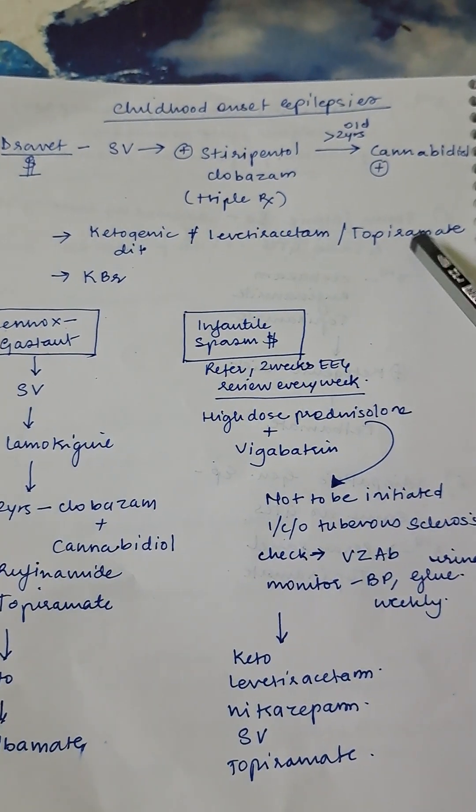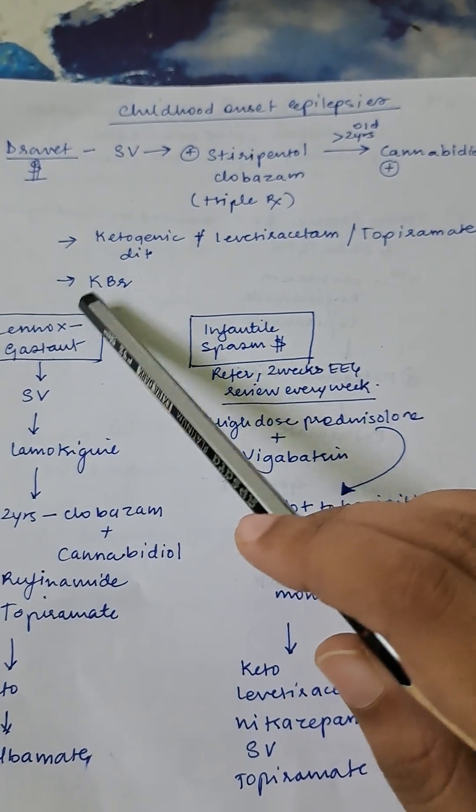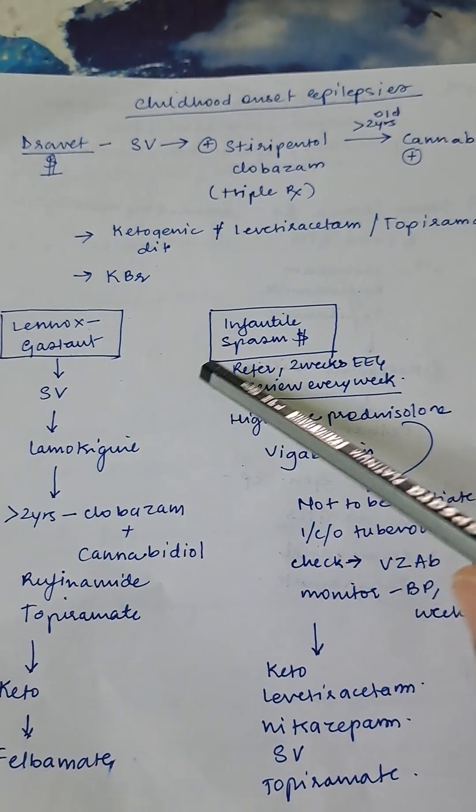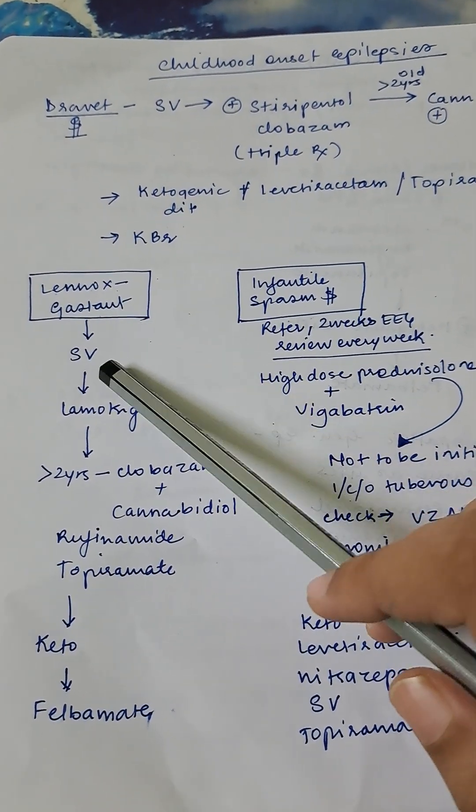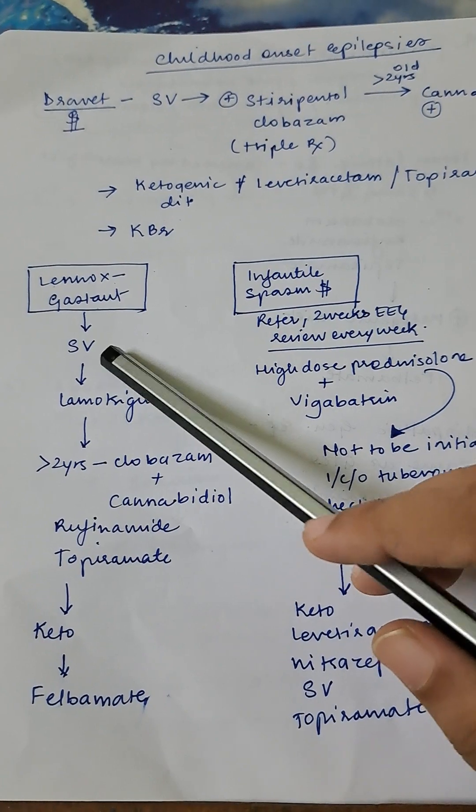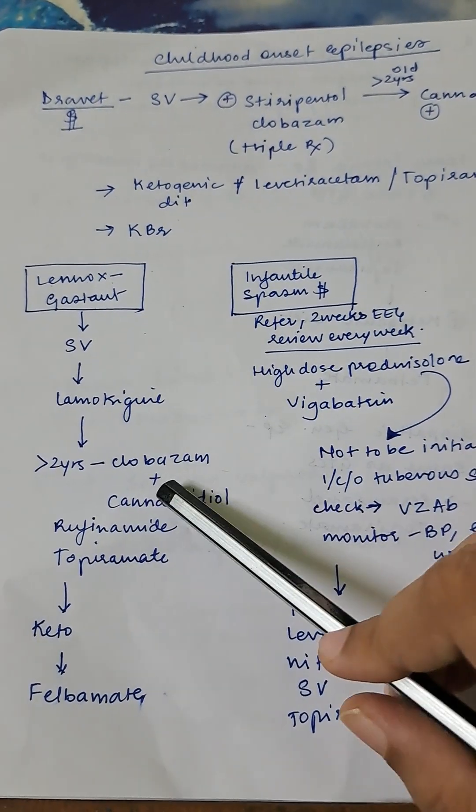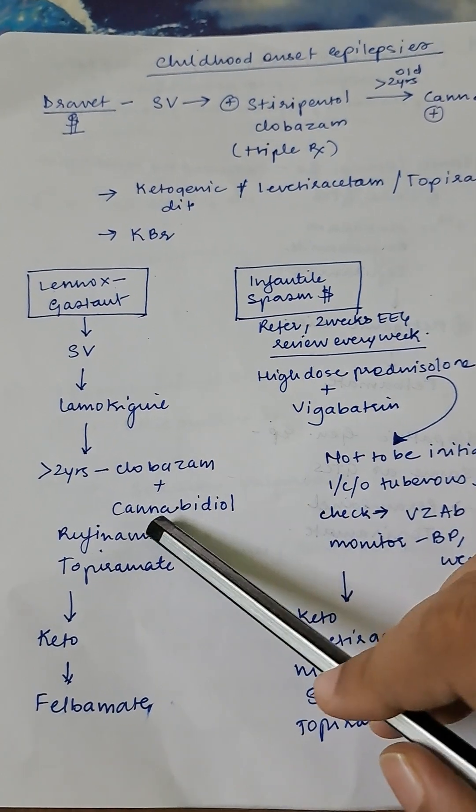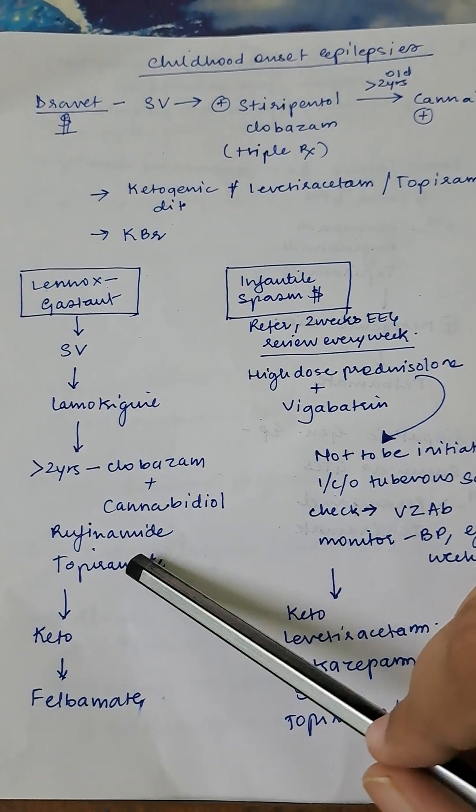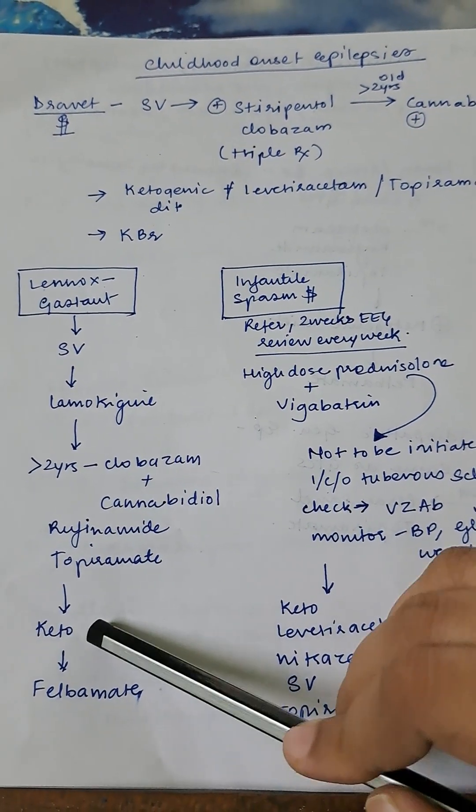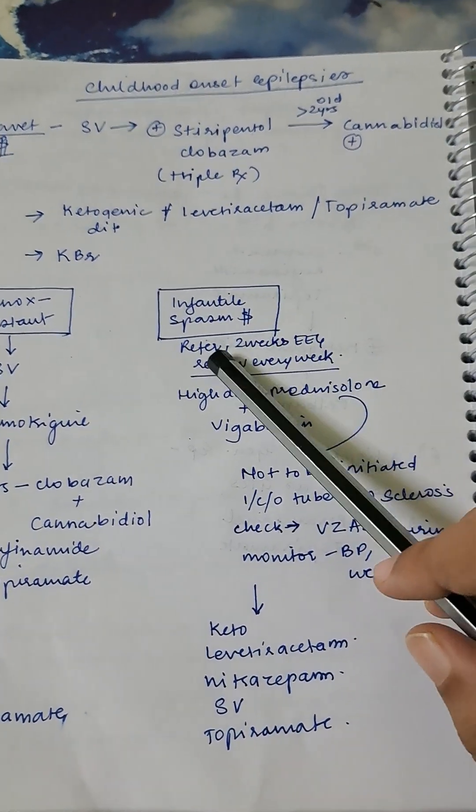Lennox-Gastaut syndrome: you'll start with sodium valproate, then lamotrigine. More than two years: clobazam plus cannabidiol, rufinamide, topiramate can be given. If this is not fulfilling, then you can give ketogenic diet and then give felbamate. Infantile spasm syndrome: